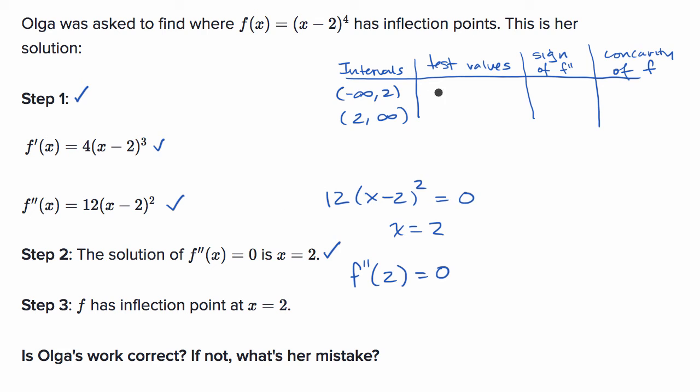So let's think about what's happening. You could take a test value. Let's say one is in this interval, and let's say three is in this interval, and you could say one minus two squared is going to be, let's see, that's negative one squared, which is one, and then this is just going to be twelve, so this is going to be positive. And if you tried three, three minus two squared is one times twelve, well that's also going to be positive.